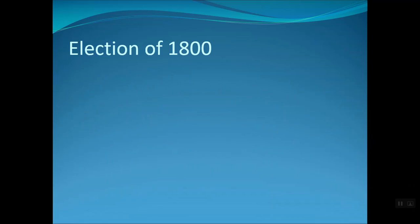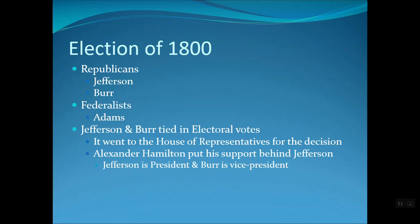Because of Adams' unpopularity over dealings with the French, as well as a shift in regional power more toward the South and West, Adams lost the election of 1800 to Jefferson and Burr. Jefferson and Burr tied in the electoral votes, so the decision went to the House of Representatives, where Alexander Hamilton put his support behind Jefferson. Jefferson became president and Burr became vice president, which led to the 12th Amendment.